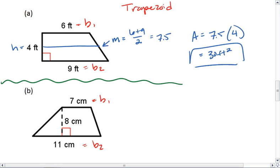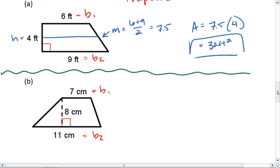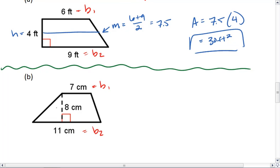For part B, my two bases are 7 and 11, which means my mid-segment is halfway between those two, which is going to be 9 centimeters. Then area is the mid-segment times the height, which in this case is 9 times 8, and that gives me 72 centimeters squared.